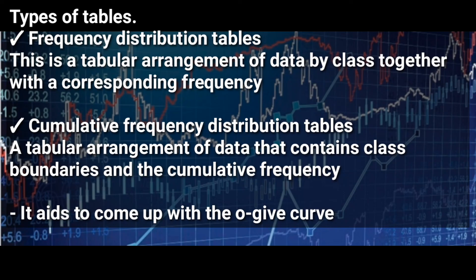The cumulative frequency distribution table is a tabular arrangement of data that contains class boundaries and cumulative frequency. We use the cumulative frequency distribution table to come up with the ogive curve, and we use the frequency distribution table to come up with the histogram.